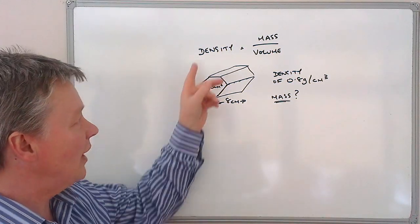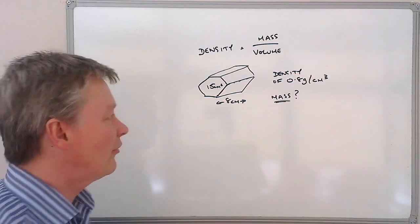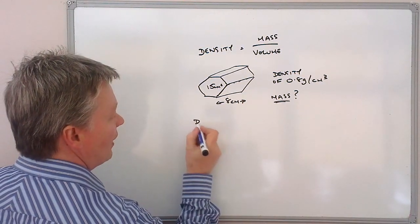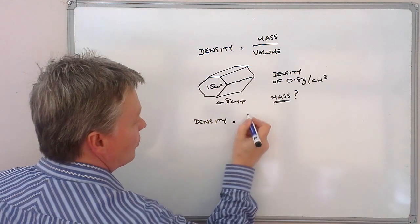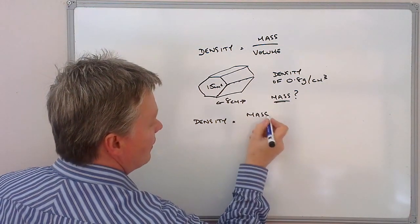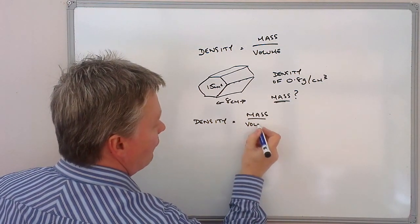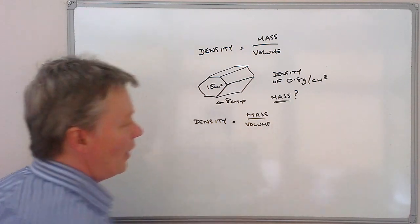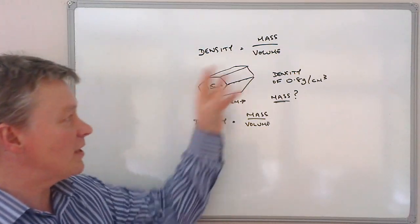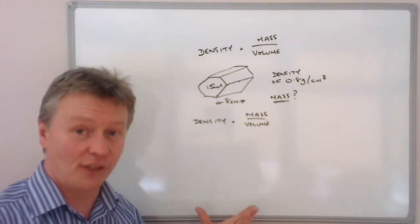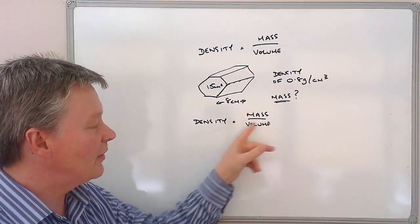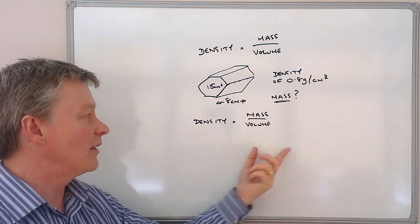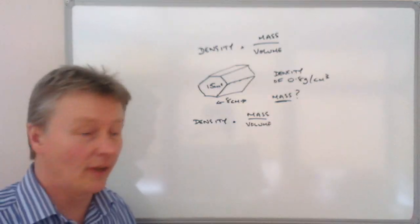So let's have a look at this formula itself. Well the first thing is I'm going to rewrite it again. So density equals mass divided by volume. And then we're able to put this information into this formula and what we're going to do then is find a way of getting mass on one side and then the numbers on the other.